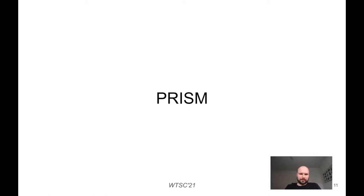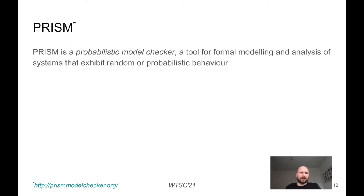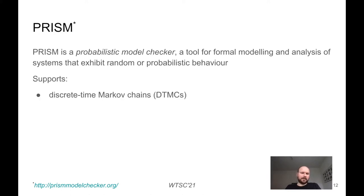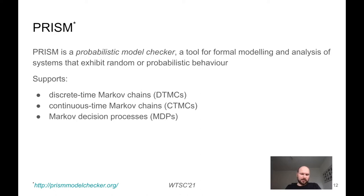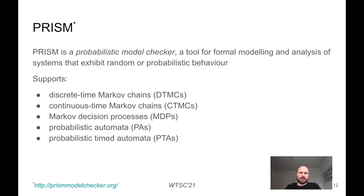Now let me talk about PRISM. PRISM is a probabilistic model checker — a tool for formal modeling and analysis of systems that exhibit random or probabilistic behavior. It supports several model types: discrete time Markov chains, continuous time Markov chains, Markov decision processes, probabilistic automata, and probabilistic timed automata. We decided to use Markov decision processes because it best suits smart contracts as it supports non-determinism.